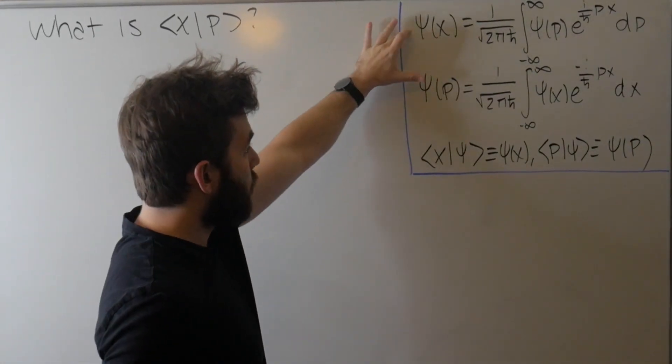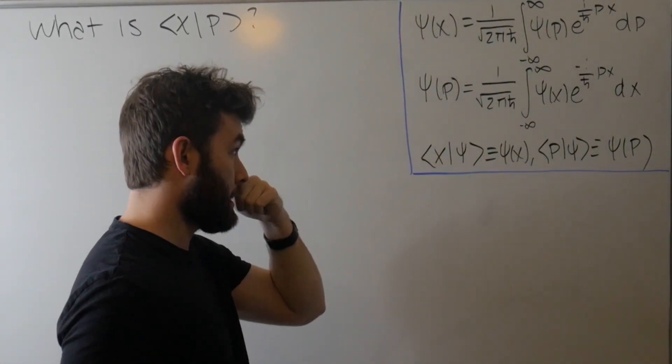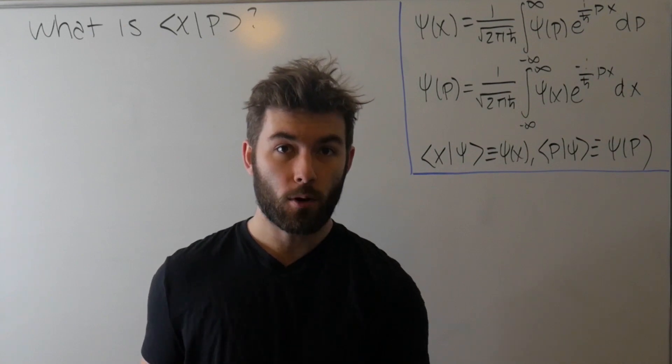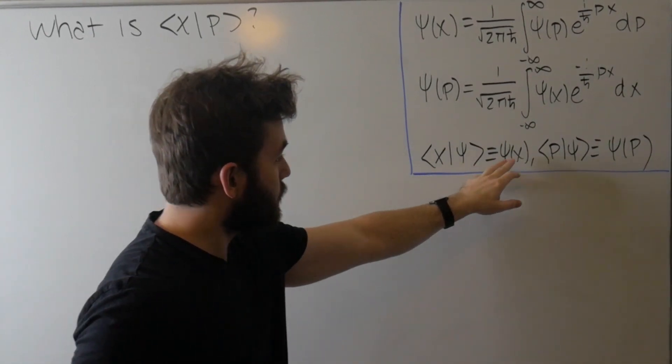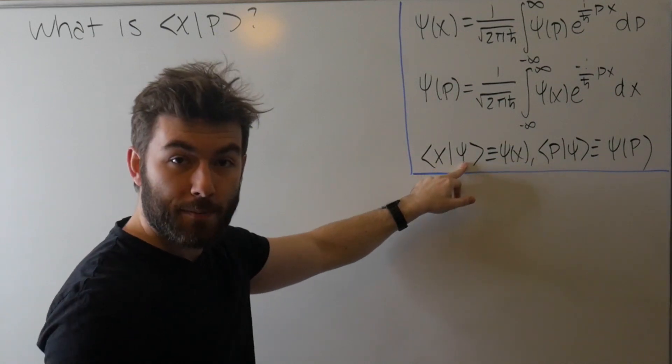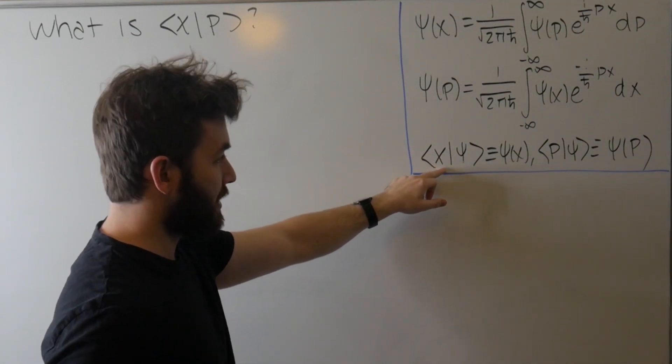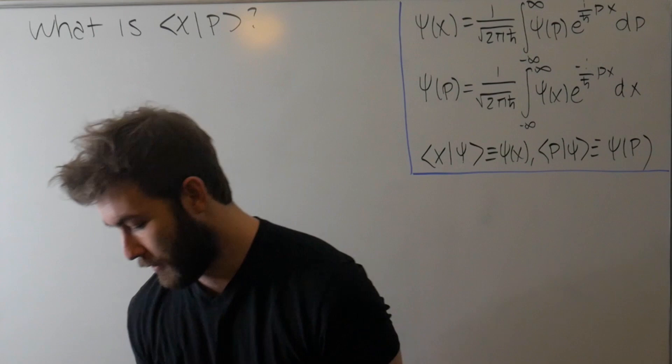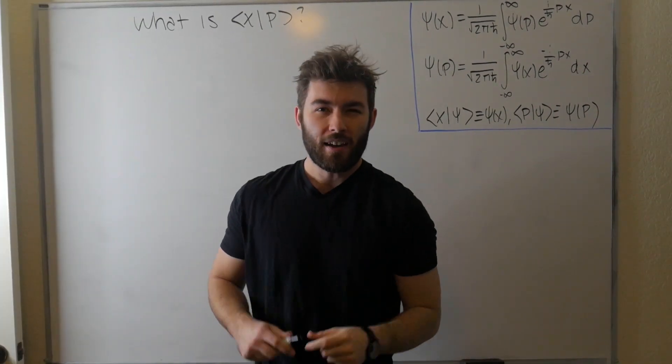One, the wave functions in the coordinate and the momentum representation are connected by Fourier transform. And two, to define it in a given representation in the first place, we take our abstract ket vector in Hilbert space and take the inner product with the basis we want to represent it in.